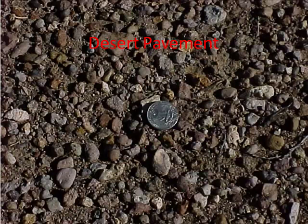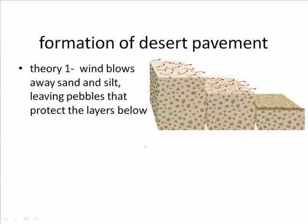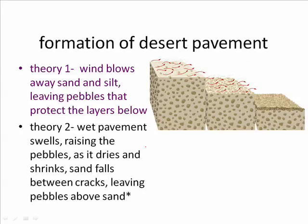Desert pavement. Most of the desert is not covered with sand dunes — it's covered with desert pavement. As you can see in this picture, desert pavement is simply a layer of pebbles too large to be blown away. But if you were to pick up one of those pebbles, you would find sand underneath. The formation of desert pavement is still somewhat controversial. Theory one states that wind simply blows away the sand and silt, leaving the pebbles behind until there's an interlocking layer preventing any more sand movement. The second theory says that as wet soil swells, the pebbles rise, and as it shrinks and dries, sand falls between the cracks, leaving the pebbles above the sand. It's possible that both theories describe what happens.